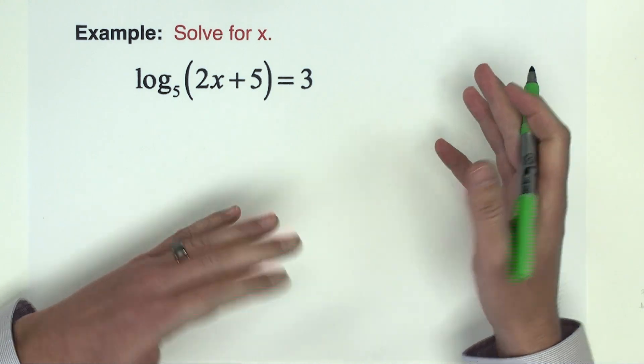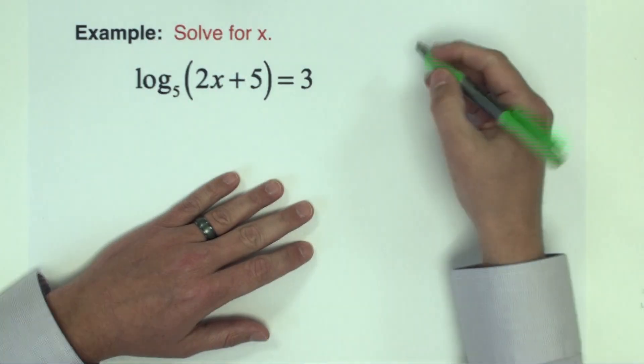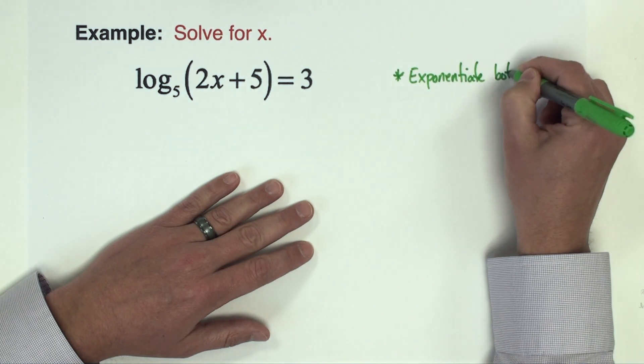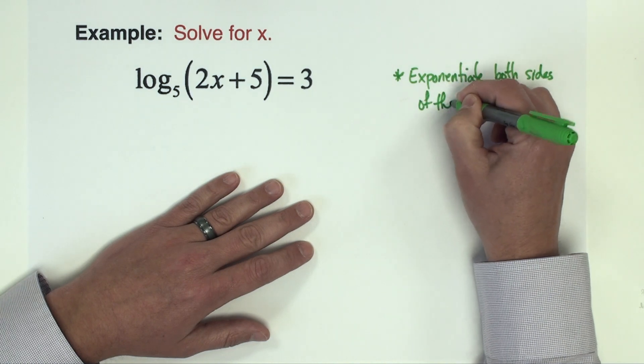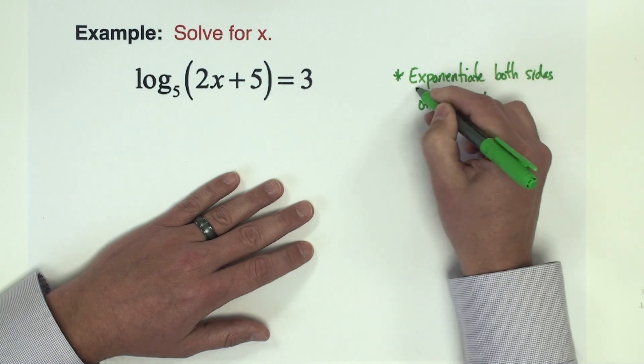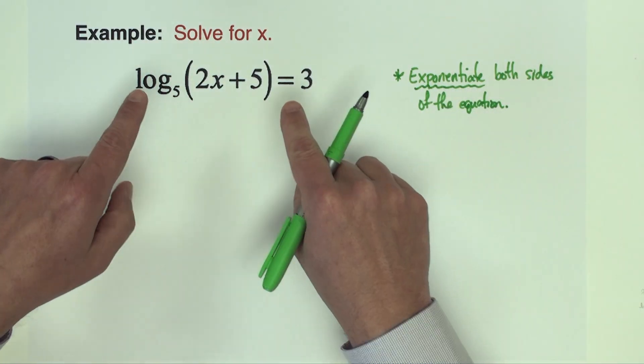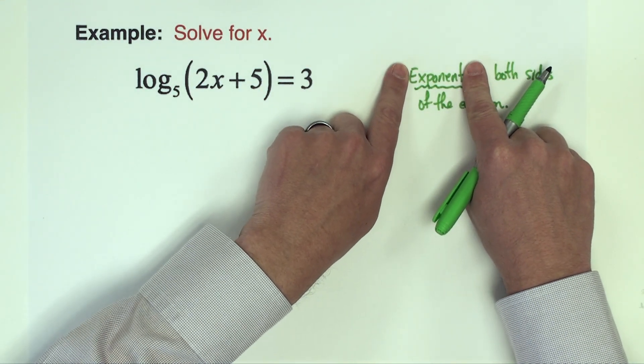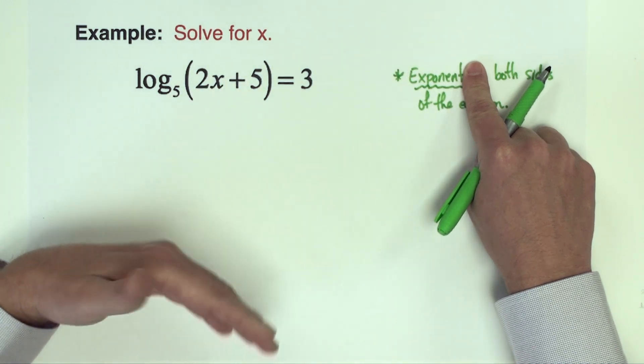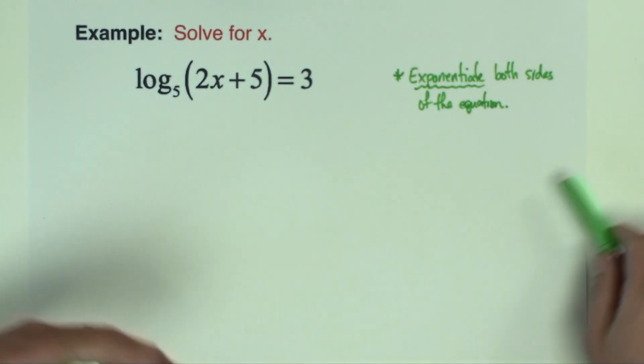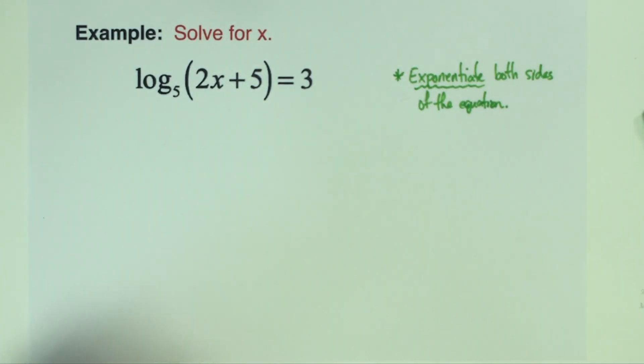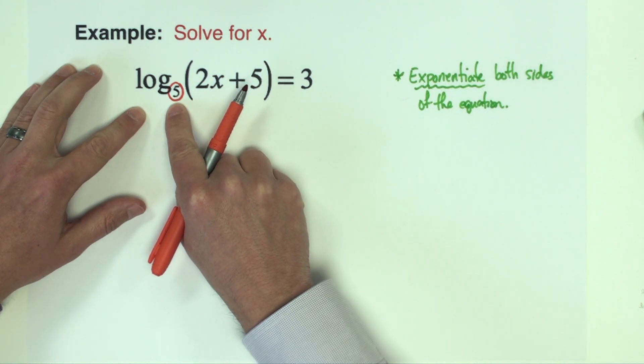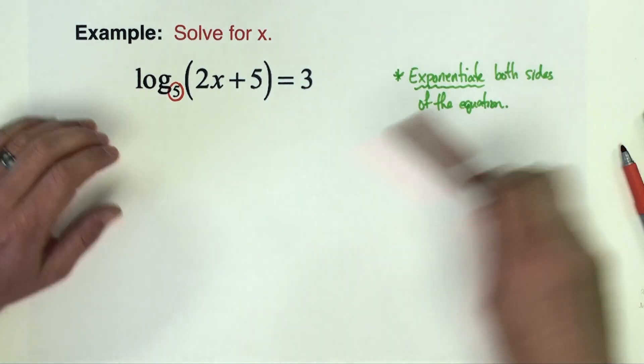Now the step that we're going to use is called exponentiate both sides of the equation. So what that means is I am going to rewrite this equation where the left and the right hand side are going to become exponents over a common base of my choosing. Now I want this to work out as friendly and easy as possible, so I am going to look at the base of the logarithm, and whatever the base of the logarithm is that's the base that I am going to use.